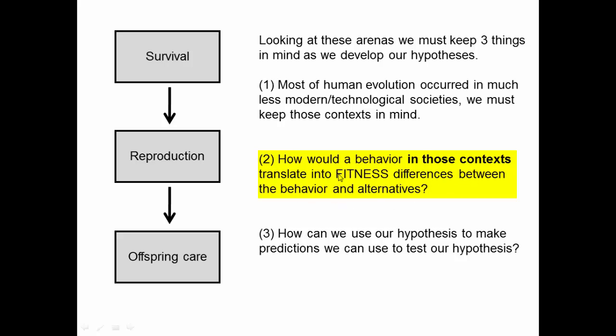A lot of people when they think about evolutionary psychology think about what would make individuals happier, more respected, or nicer. But nicer or happier aren't going to be selected for unless they translate into an increased number of offspring and grandchildren. We always need to relate the behaviors we're thinking about to fitness differences.